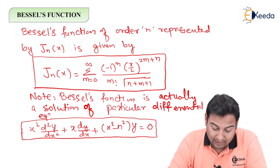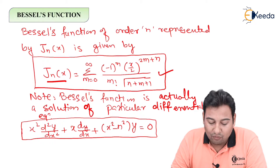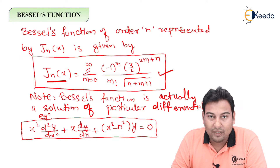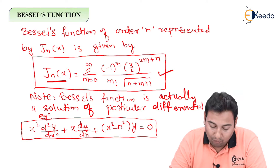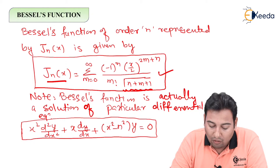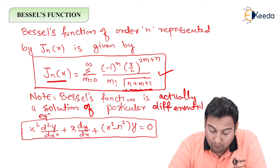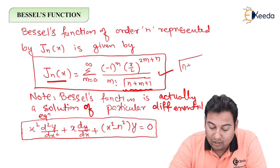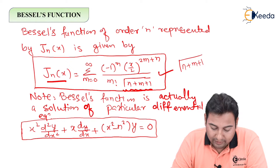Bessel's function is given by J_n(x) and the formula is: summation of m equals 0 to infinity of (−1)^m times (x/2)^(2m+n) upon m factorial times gamma(n + m + 1). Note that this is gamma, not square root — there is a difference between gamma and square root that we'll discuss later.